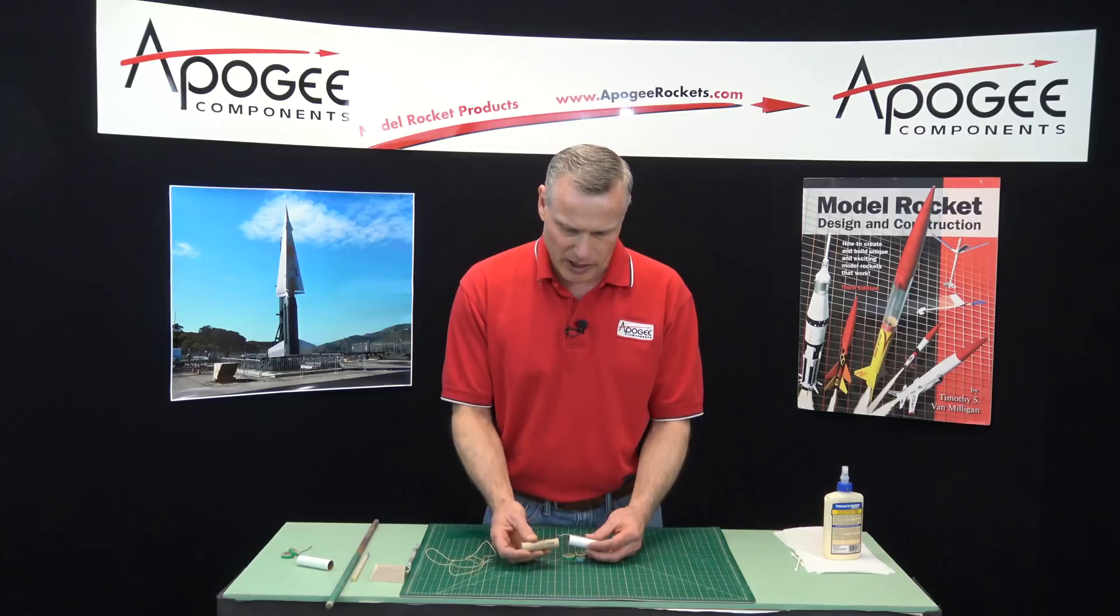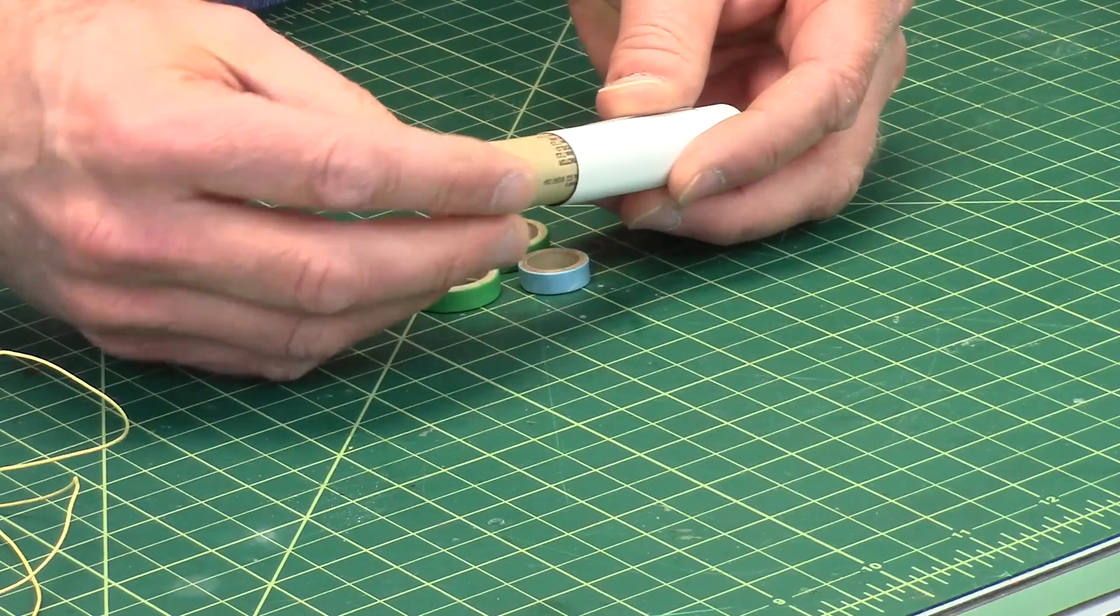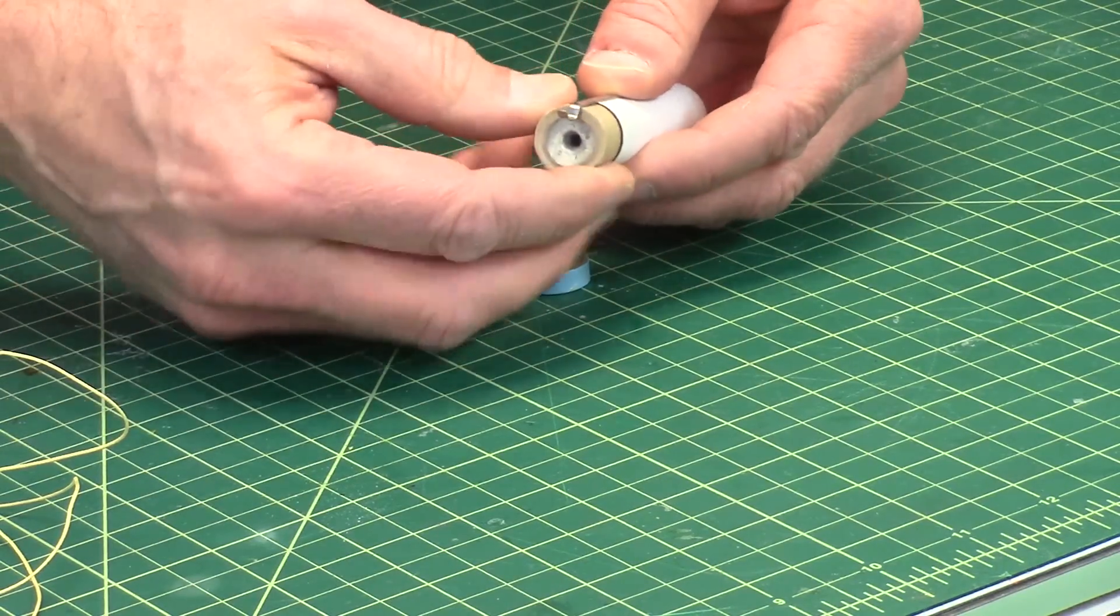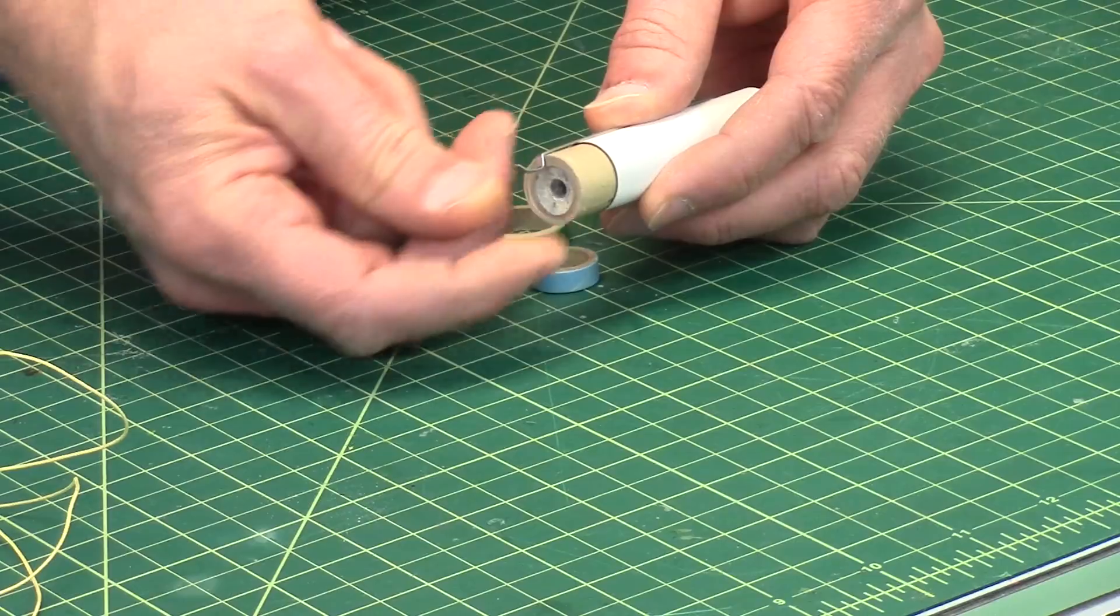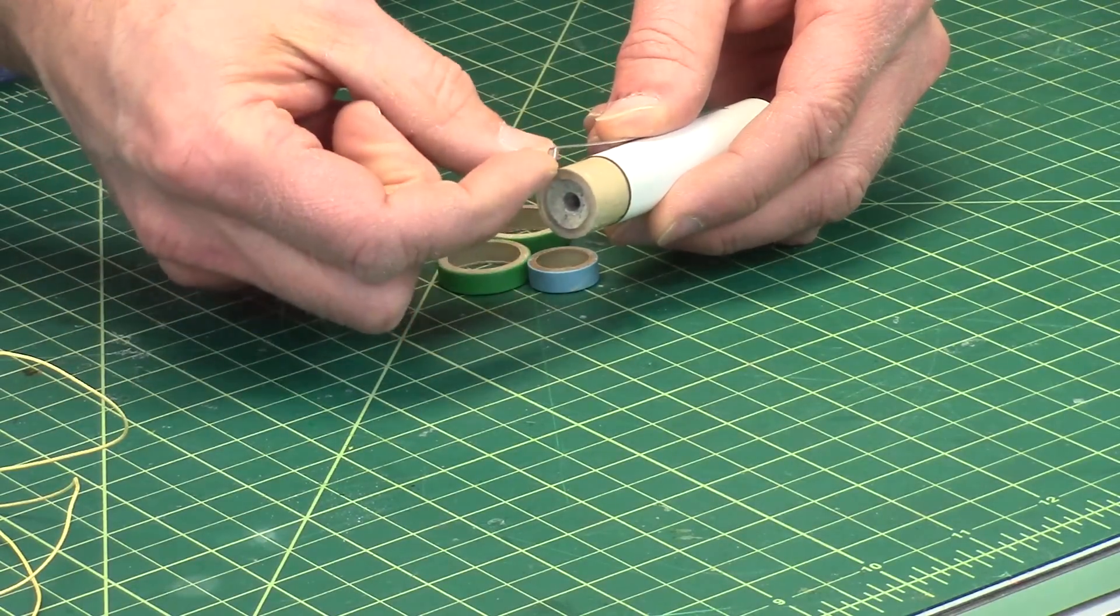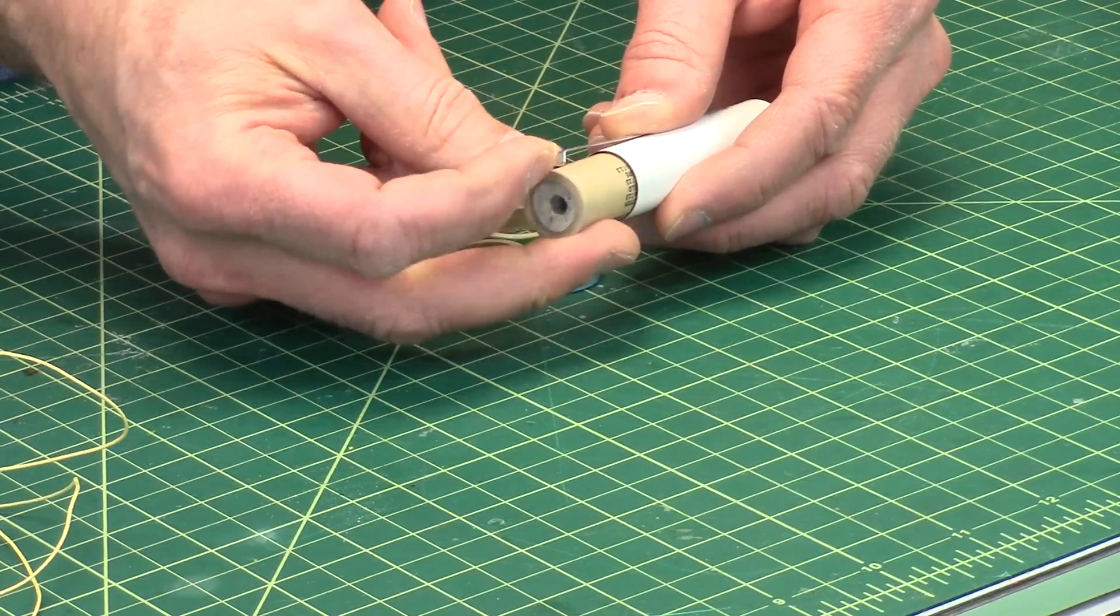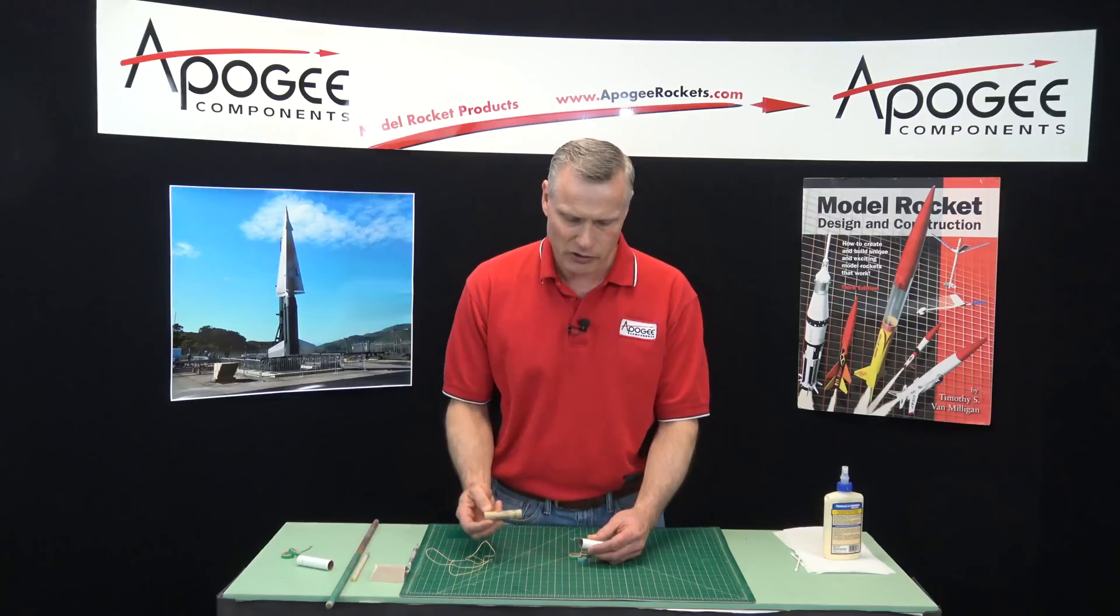And this end right here goes into that little slot. And then when you put the rocket engine in it, it will slide in and then clip over the end just like that and hold it in. And then this part here allows you to bend it up so you can pull it out after the flight is over.